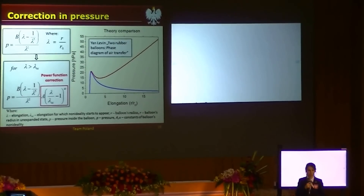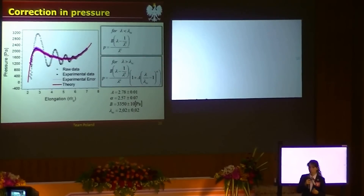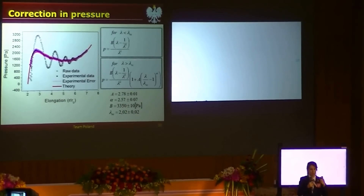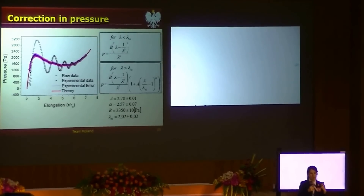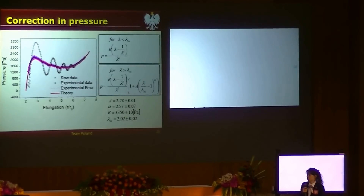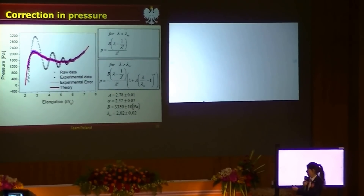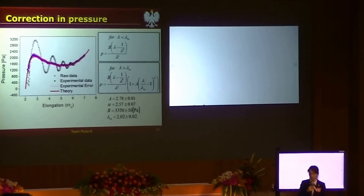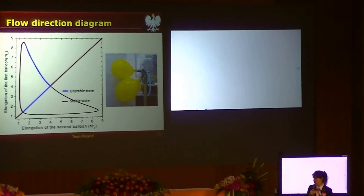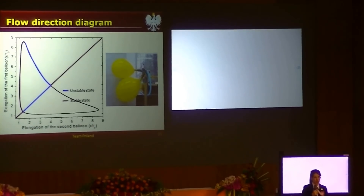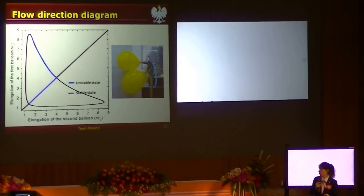We fitted it directly to several balloons and it fitted pretty well. We made five experiments with the same type of balloon. Here you can see the pink area — it is the standard deviation of these measurements. From these measurements, we could derive the coefficients which would describe our rubber. With these coefficients, knowing how exactly the pressure changes in the balloon, we can finally derive the diagram showing the direction of flow between the balloons depending on the initial volumes.